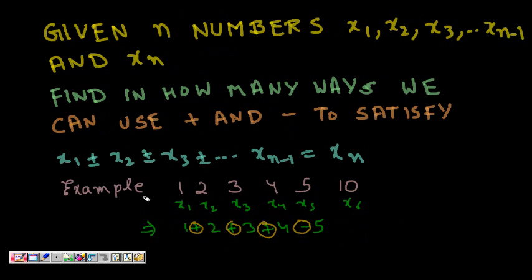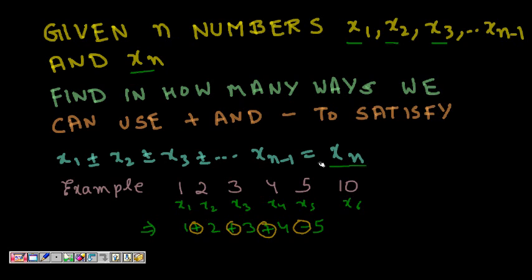Formally, given n numbers x1, x2, x3, ..., x(n-1), and xn, find in how many ways we can use addition and subtraction symbols to satisfy: x1 ± x2 ± x3 ± ... ± x(n-1) = xn. We have to fill the blanks with plus or minus signs to make the left-hand side equal to the right-hand side.